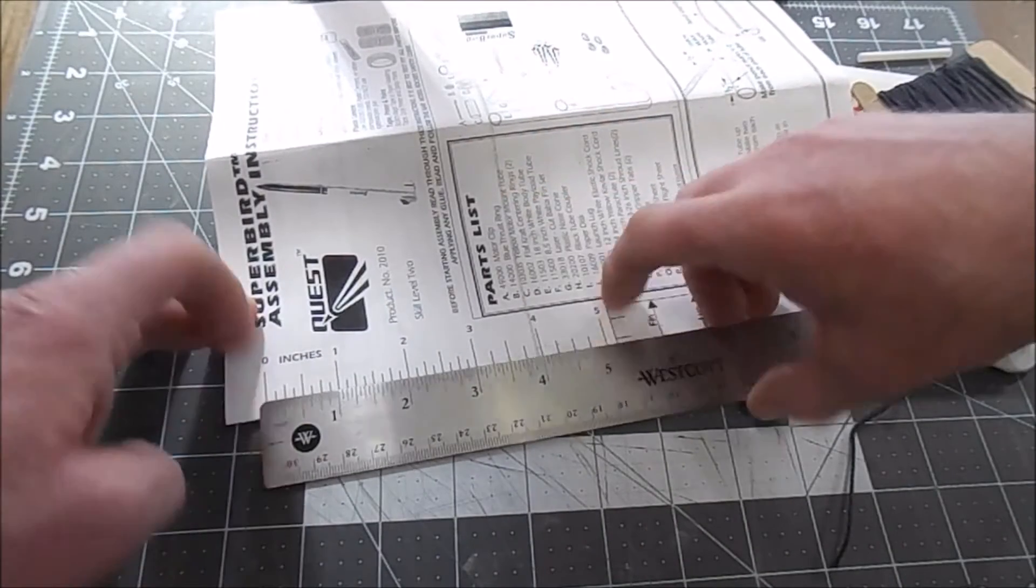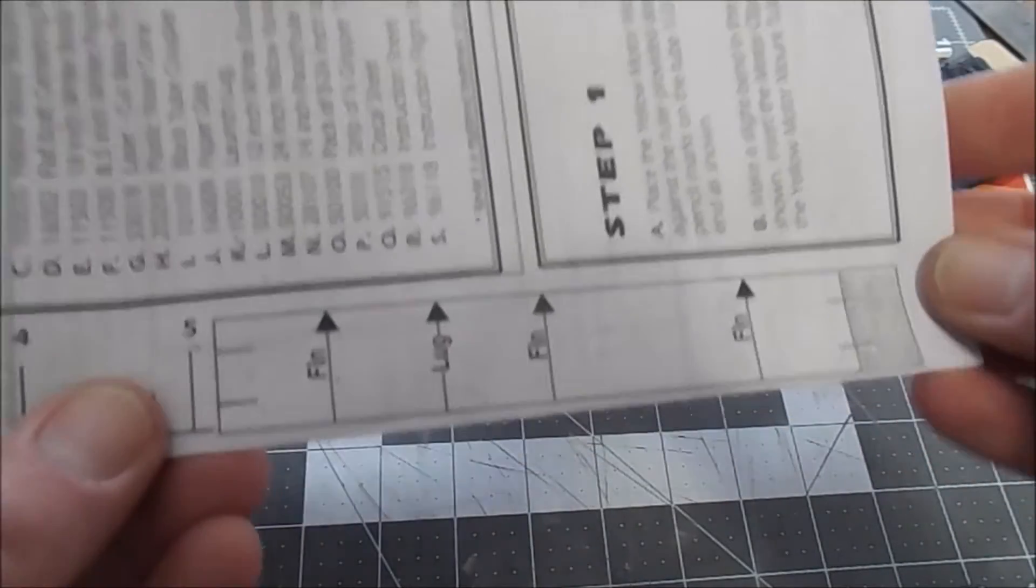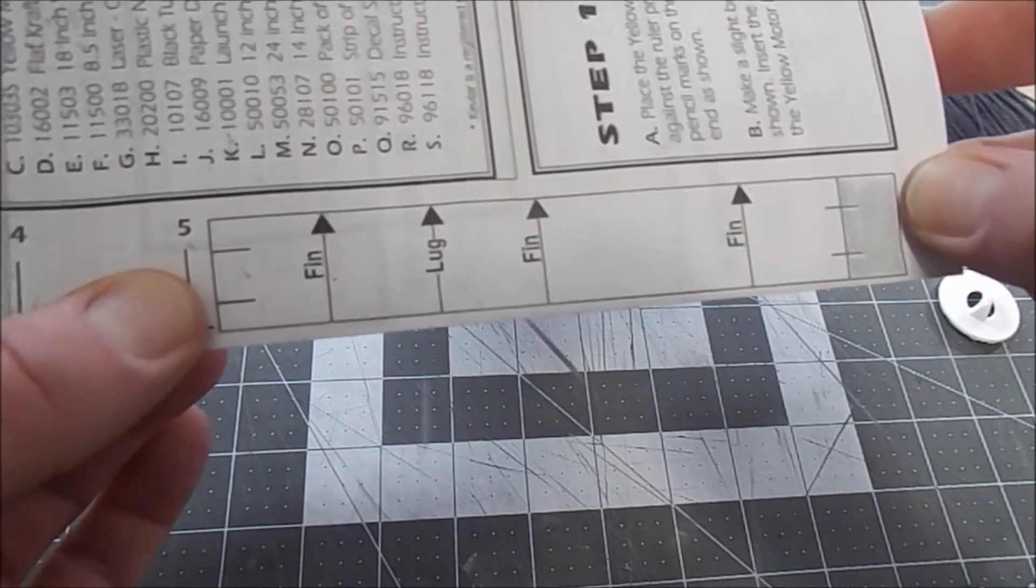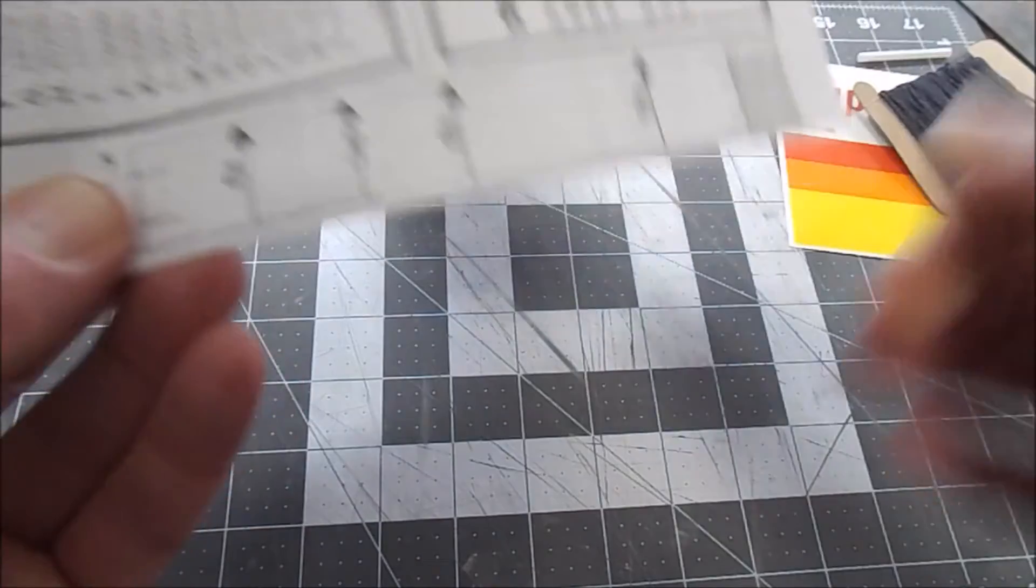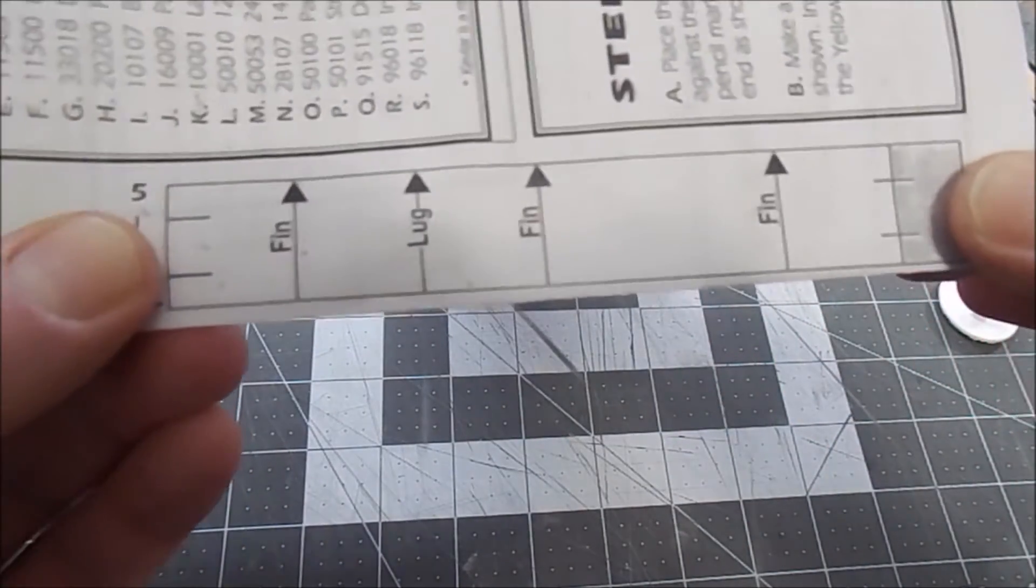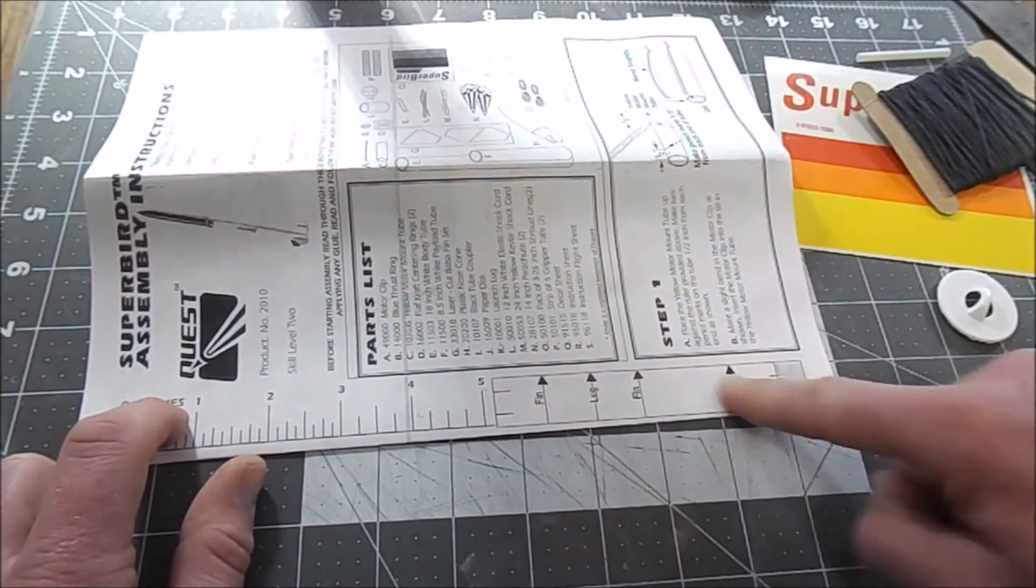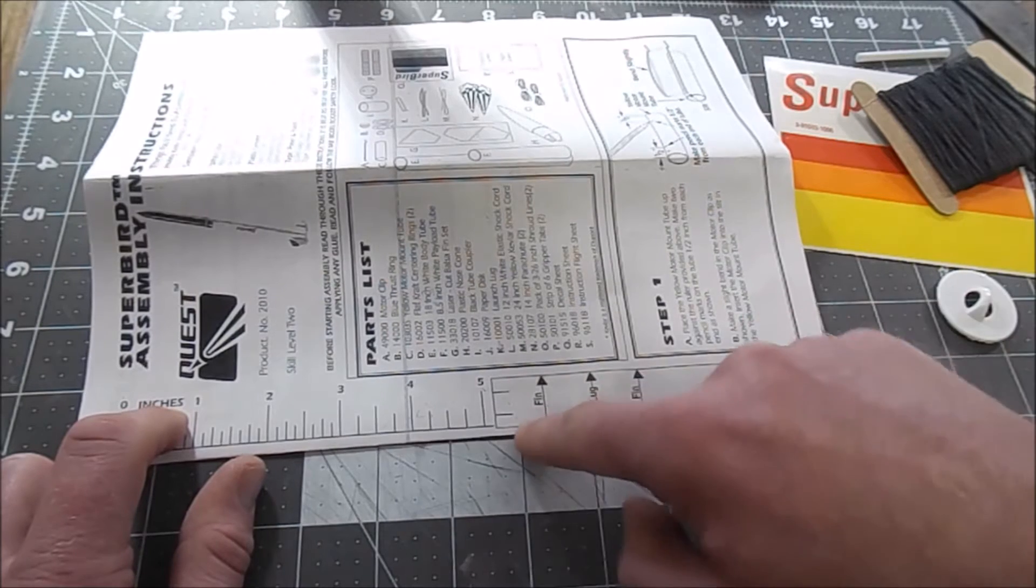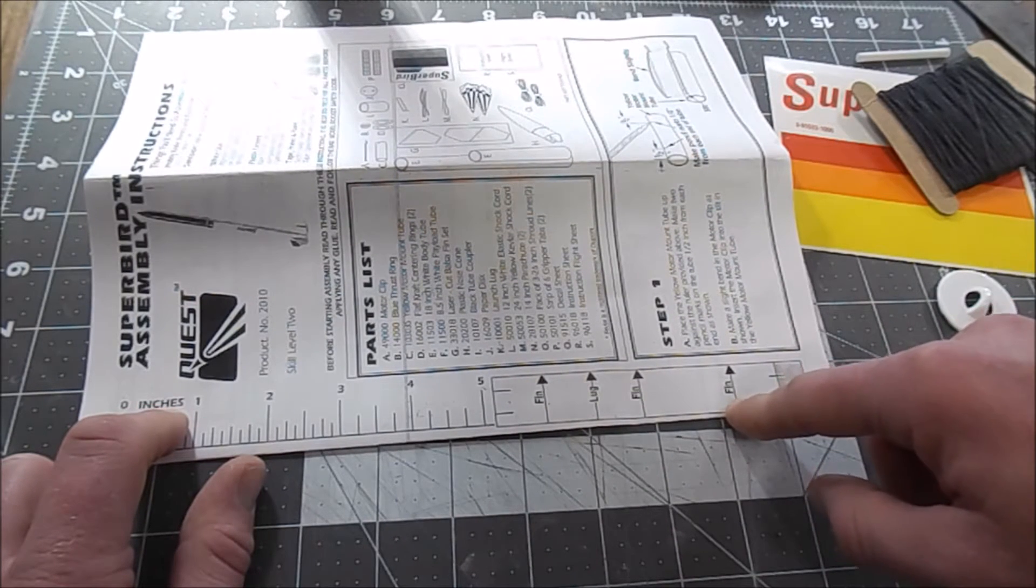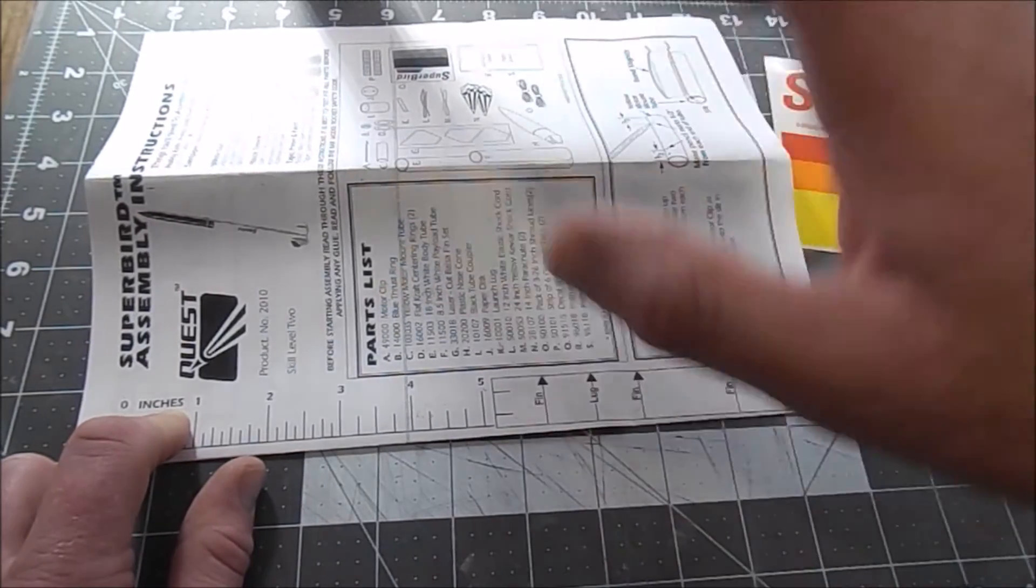Well why is this important? It might have something to do with our fin marking guide. Now I've built Quest kits in the past and I've found that sometimes the fin marking guide is either too large or too small for the body tube. What happens then is when you use that to mark where your fins are going to go, if you glue them where you've marked it you might find that the fins are not evenly spaced all the way around the rocket. We want them to be 120 degrees apart from each other with three fins.